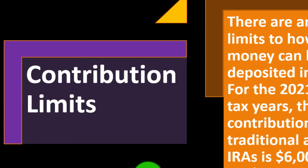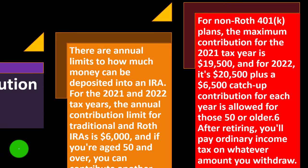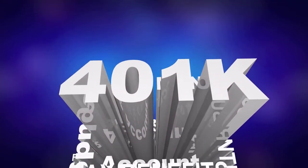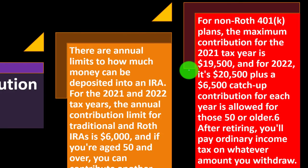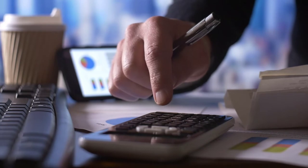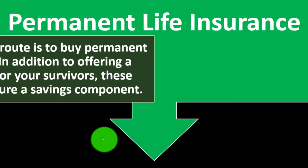Regarding contribution limits: for the 2021 and 2022 tax years, the annual contribution limit for traditional and Roth IRAs is $6,000, and if you're age 50 or over you can contribute an additional $1,000 catch-up contribution. For non-Roth 401k plans, the maximum contribution for 2021 is $19,500, and for 2022 it's $20,500, plus a $6,500 catch-up contribution for those 50 or older. After retiring, you'll pay ordinary income tax on whatever amount you withdraw.